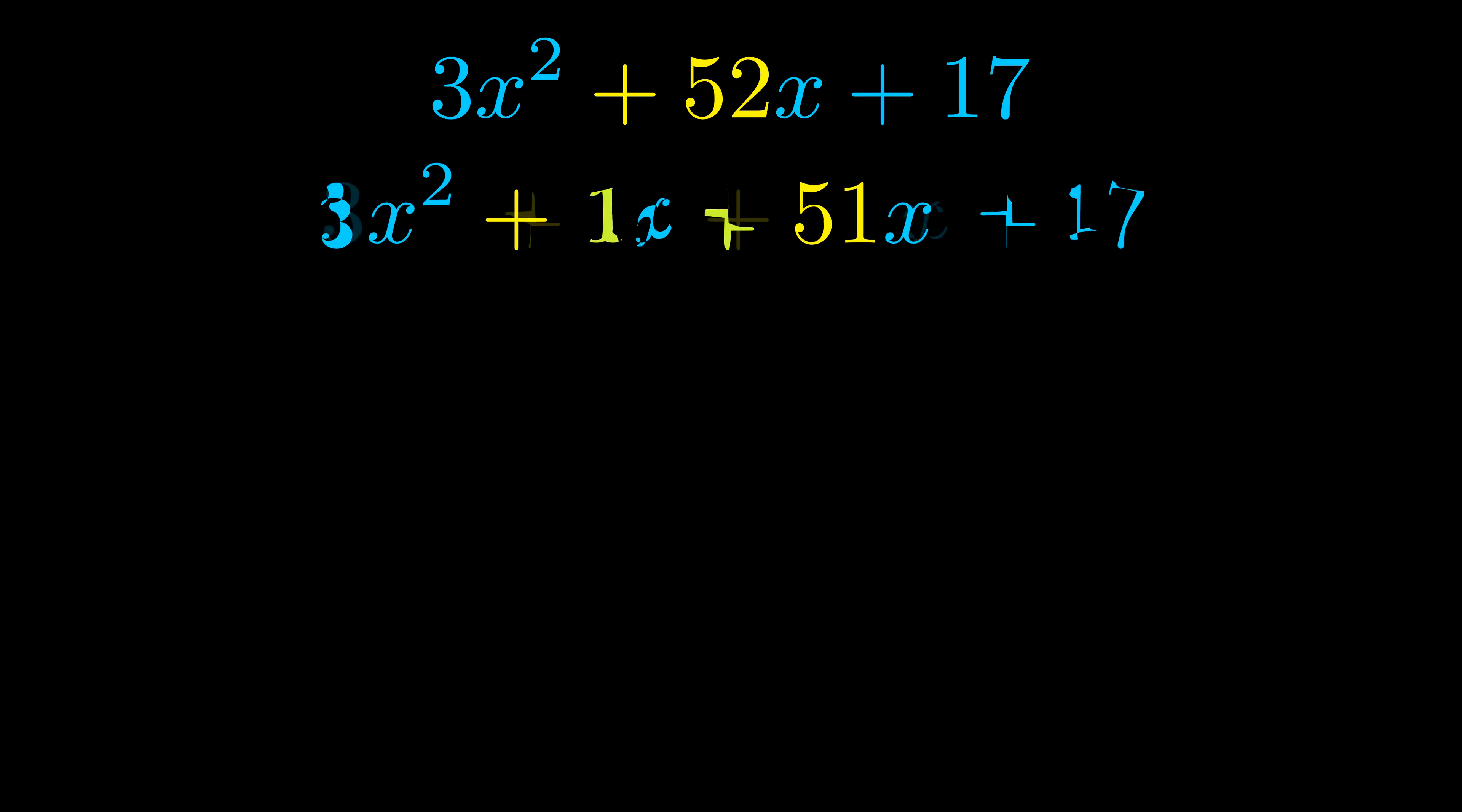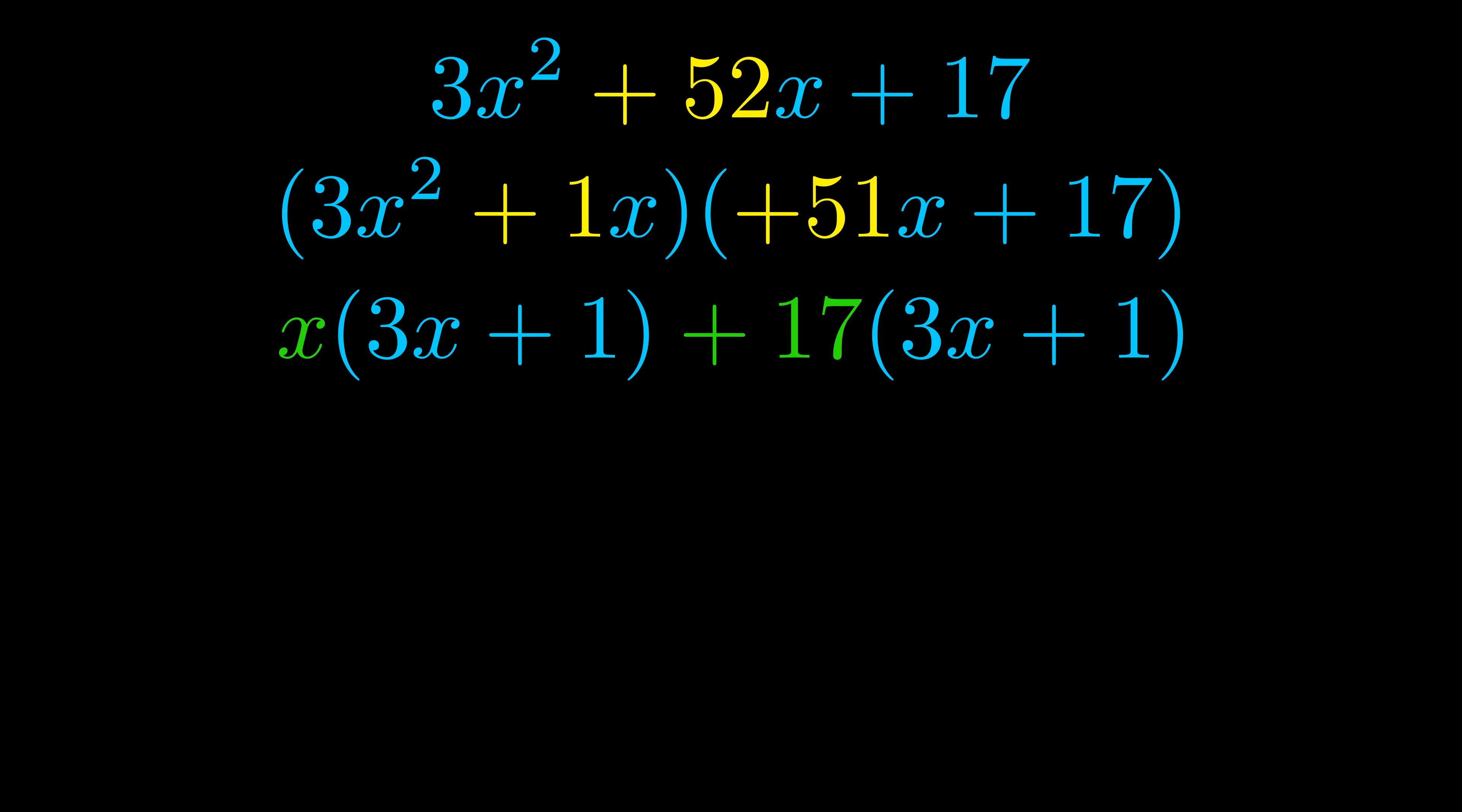Once we've done this we go ahead and we put parentheses around the first term and the last term. And we do that so that we can take the greatest common factor out of both terms. We can see the greatest common factor is now outside in green. Notice also how what remains inside of the parentheses is the same in both cases. The blue values are the same. Those blue values will become one of our factors and we will combine the two green values the GCFs that we pulled out to get the other one. And that is our fully factored equation.